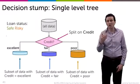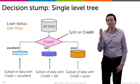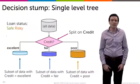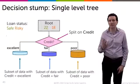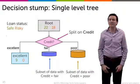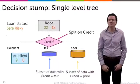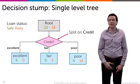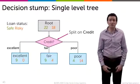In our case, we had all the data, we split on credit, and we decided that some subset of the data had excellent credit, some had fair, and some had poor. So we assigned each of those subsets to the subsequent node. In our new visualization notation, we have the original root node with 22 safe and 18 risky. For excellent credit, we have nine safe and zero risky. For fair credit, we have nine safe and four risky. And for poor credit, we have four safe and 14 risky. That's what our data looks like at the next level after we've done the splits.